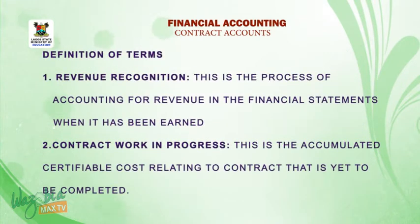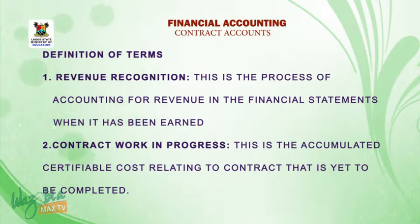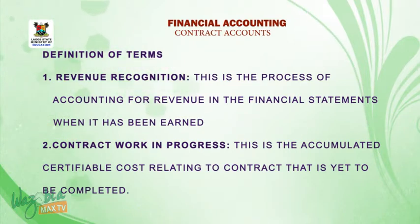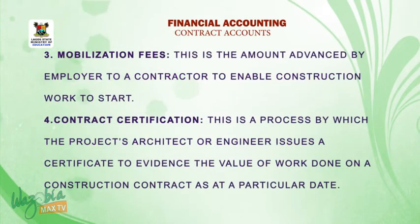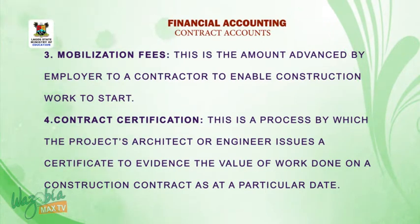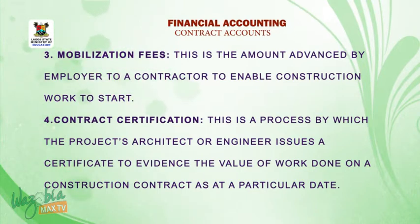Definition of terms. Revenue recognition: this is the process of accounting for revenue in the financial statement when it has been earned. Contracts work in progress: this is the accumulated certifiable cost relating to a contract that is yet to be completed. Mobilization fees: this is the amount advanced by an employer to a contractor to enable construction work to start.